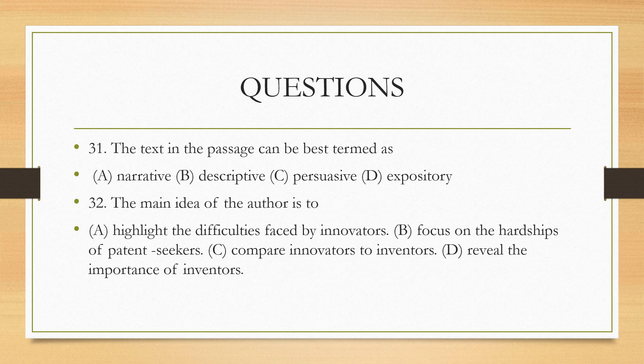So the text in the passage can best be termed as expository. Why? Because it is not merely telling you there is a difference between innovation and invention — it is also giving clarity to readers that invention means a certain thing, innovation means a certain thing, and further making the point that innovation is better and should be brought out in society. They are making a point by drawing the difference. That is why the correct answer is expository.